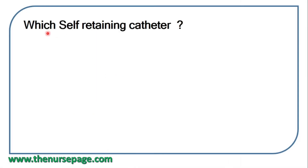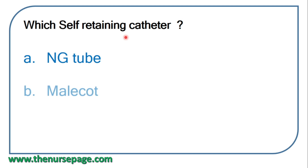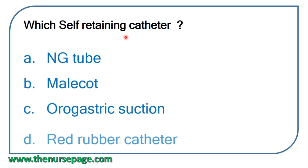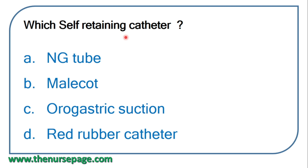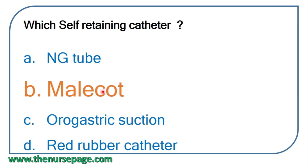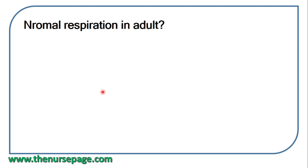Next question: which is a self-retaining catheter? From the given options — NG tube, Malecot catheter, orogastric suction, red rubber catheter — the correct answer is the Malecot catheter, which is an example of a self-retaining catheter.